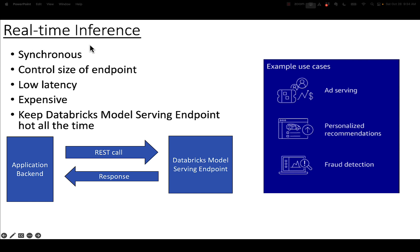The first type is real-time inference. This is when you really need low latency, which means the application calls predict and you need a response as quick as possible. In this instance, where you need to do something fast and you don't care about price, you should use a Databricks model serving endpoint, which means your application back end is going to make a REST call, give it some parameters, and get a response back so that you can use it immediately.